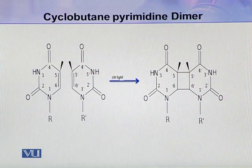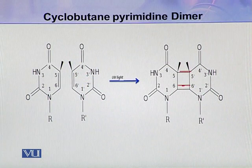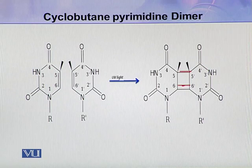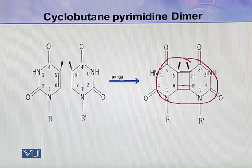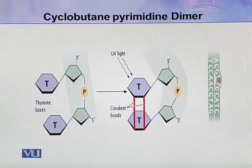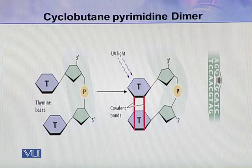As shown in the diagram, two rings are formed — one bond between C5 of both rings and the second bond between C6 of both rings, forming the dimer. Another figure shows how this dimer affects the conformation of the DNA.